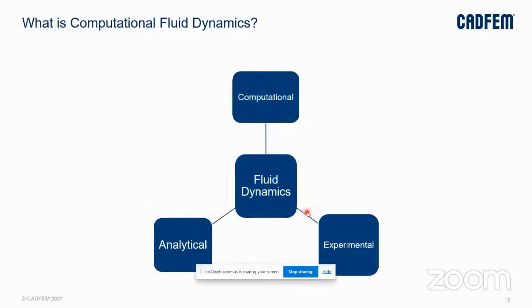There are several ways of dealing with a Fluid Dynamics problem. Experimental, analytical, and computational methods are three of them. Experimental and analytical methods have long been used to study Fluid Dynamics. Recently, with the advent of high-performance computing, CFD has become more and more viable. While the general trend is towards CFD, analytical and experimental methods still have a huge role to play in industry and academic research. These three complement each other in studying a Fluid Dynamics problem.